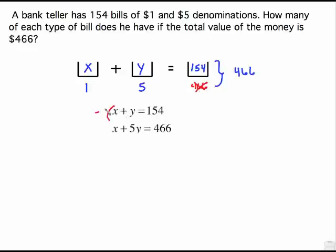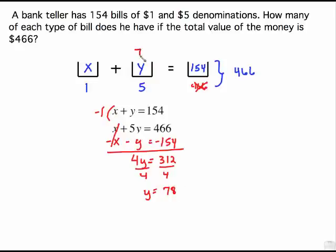To solve this, all I need to do is multiply everything by negative 1, which makes negative X minus Y equals negative 154. This time our X's cancel out. We have 4Y equals 312. Divide both sides by 4. And Y is 78. And if Y is 78, then this is going to have to be 76 because that's the only way that adds up to 154. So it's 78 of these, which is the $5 bill. So it's 78 $5 bills. And X is 76 $1 bills.